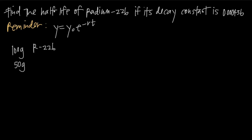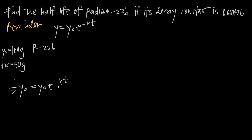Because we're interested in half-life, we're interested in the time it takes for the substance to decay to half its amount. So the y value at the end is just half of y sub-zero. If y sub-zero is 100 grams, we want to know how long it takes to reach 50 grams — which is one-half times y sub-zero. So for half-life problems, we always replace y with one-half y sub-zero, set equal to y sub-zero times e to the negative r times t. Plugging in the decay constant 0.000436, we get one-half y sub-zero equals y sub-zero times e to the negative 0.000436 times t.